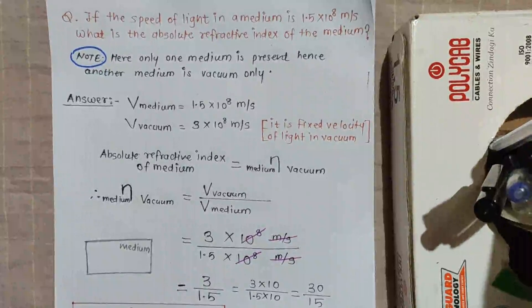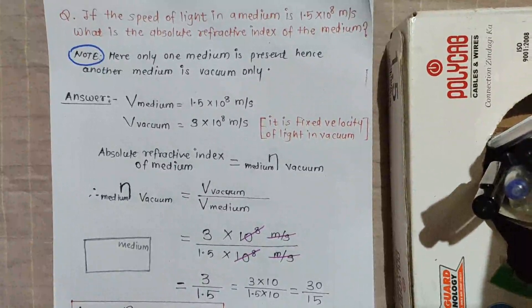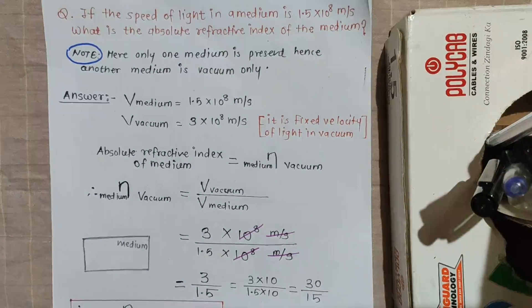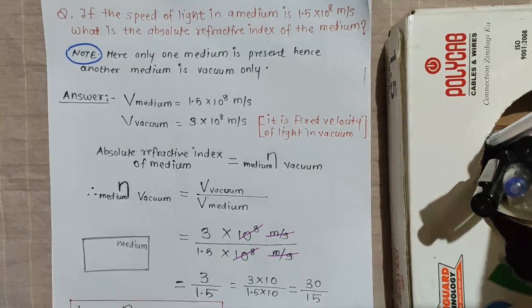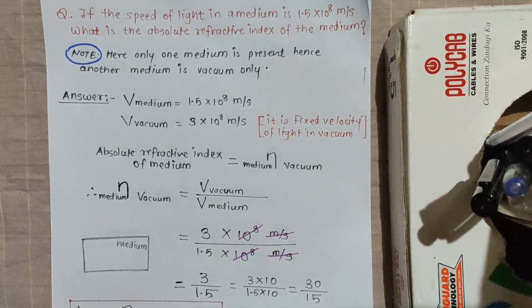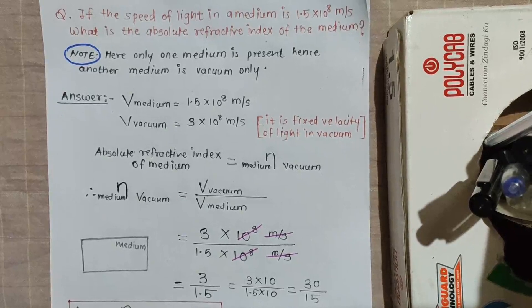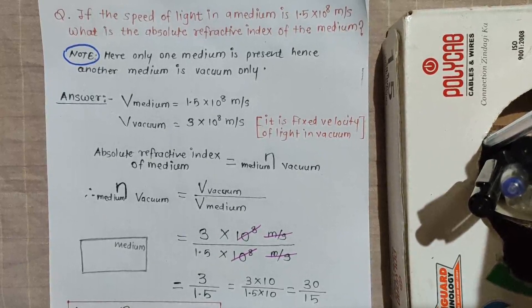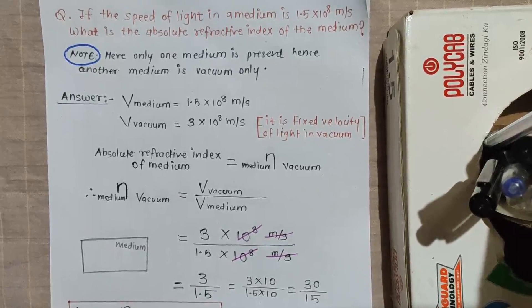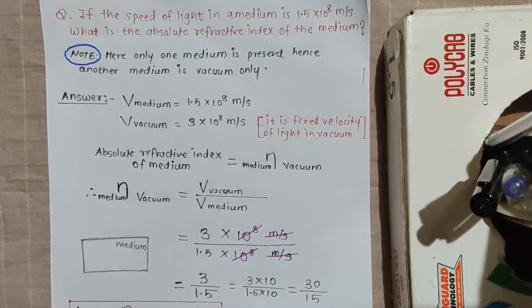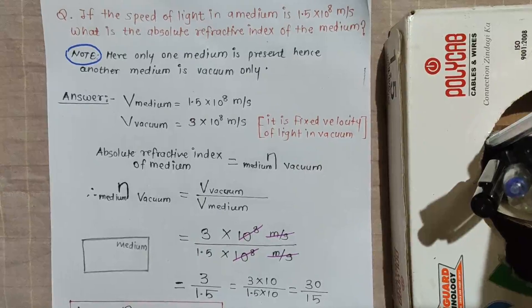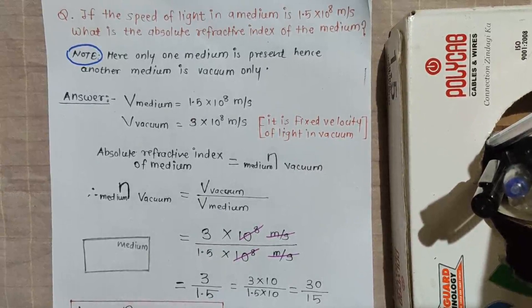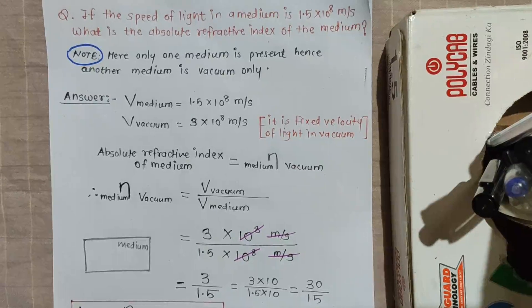Good evening students, this is the fifth video on refraction of light. In the previous session we covered absolute refractive index and refractive index — two concepts. Let's revise: the absolute refractive index is defined when the first medium is vacuum. If light travels from vacuum into a second medium like water, the refractive index of that medium with respect to vacuum is called its absolute refractive index.